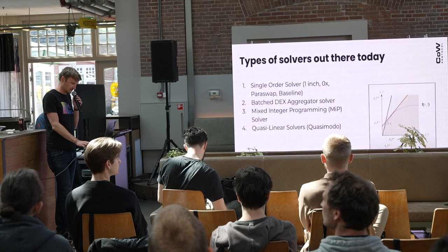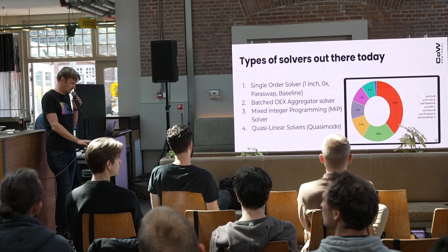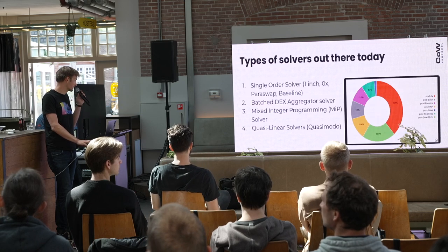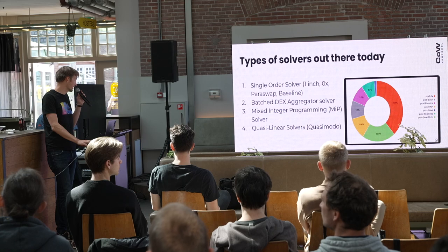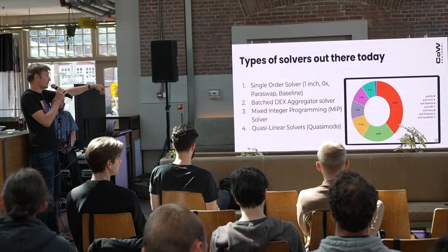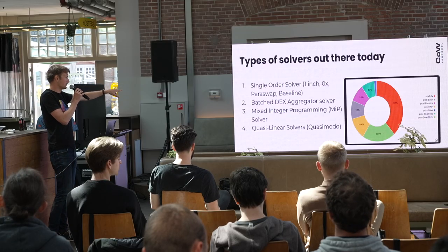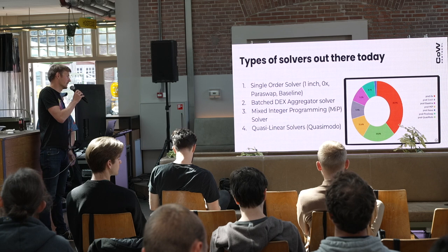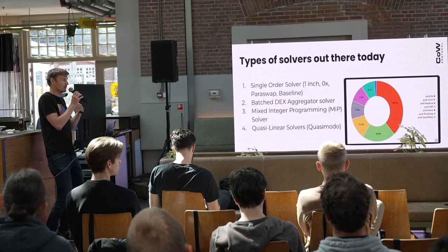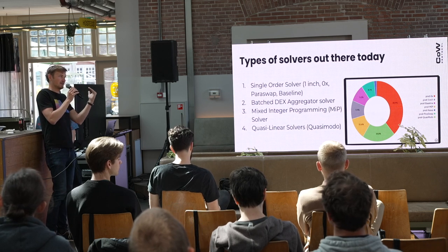These are the solvers that are out there today. We consider ourselves a meta-DEX protocol. We have solvers that take each order and settle it against 1inch, try to see how 1inch would solve it, how 0x would solve it, how Paraswap would solve it — this acts as a baseline. If there's no COW value from peer-to-peer batching, we just match with whatever is the best aggregator out there.